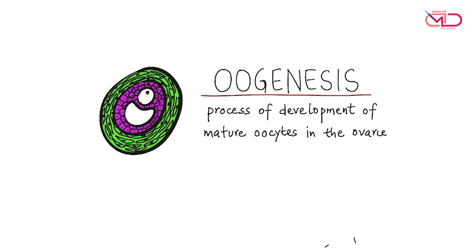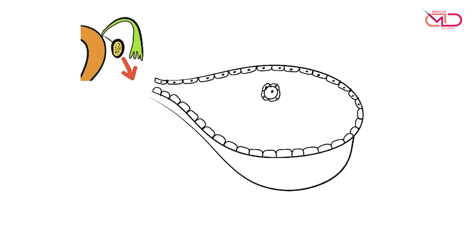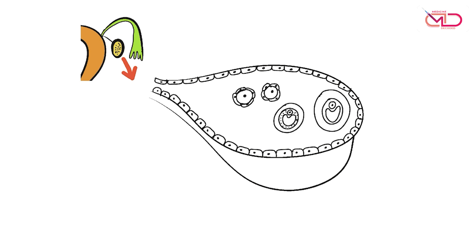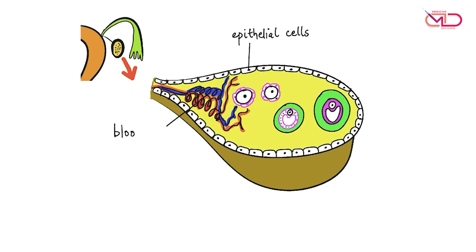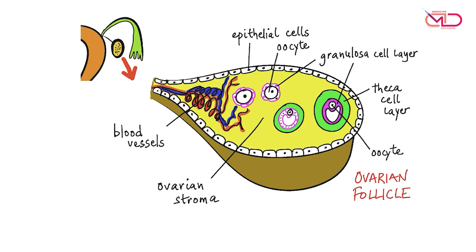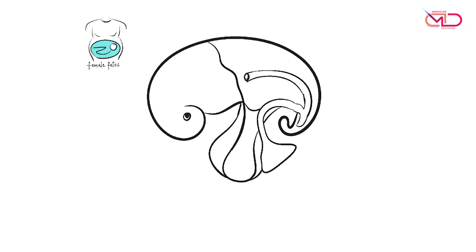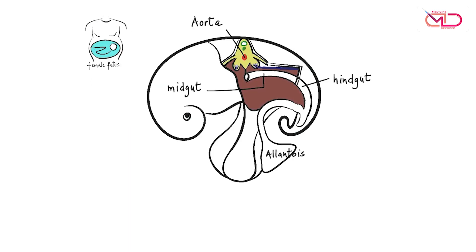Let's look at the structure first. The ovary is lined by a cuboidal layer of epithelial cells. There are a number of oocytes surrounded by a granulosa cell layer and an outer theca cell layer; the rest is ovarian stroma. The oocytes surrounded by granulosa and theca cell layers is what we call the ovarian follicle.